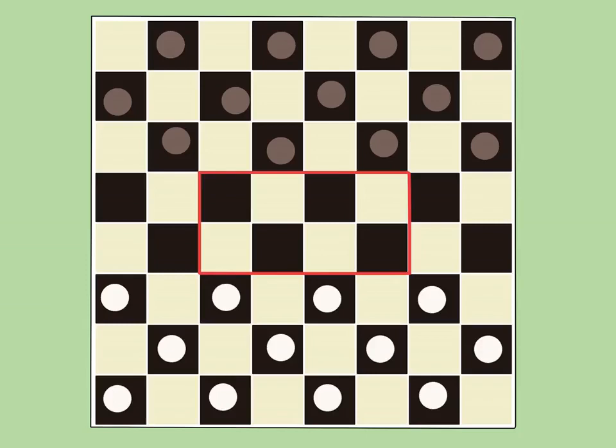It takes practice to judge how many pieces you need to commit to the center in a particular game. As a general rule, you should try to build up enough of a position that the opponent is unable to safely advance anywhere except the left and right edges. After that goal is achieved, adding more of your pieces can actually clog up your board and lower your options.